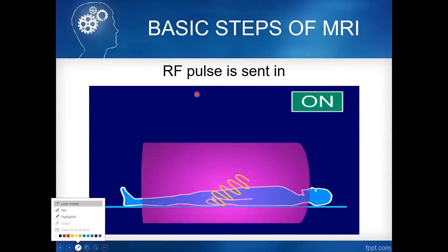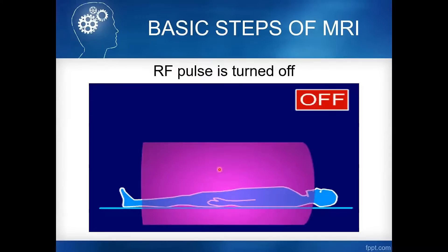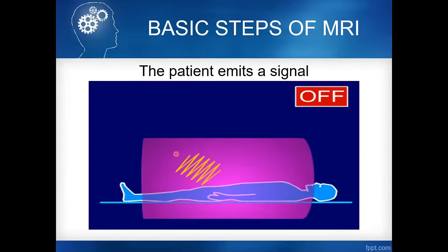During the RF pulse, the patient begins to emit a signal. The radio frequency absorbed by the hydrogen proton is then emitted as an MRI signal, which is measured by our detector — the receiver coil — to construct anatomical images.